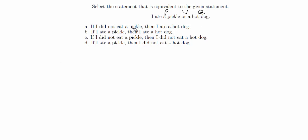Option A says: if I did not eat a pickle, then I ate a hot dog — that's not P implies Q. B: if I ate a pickle, then I ate a hot dog — that's P implies Q. C: if I did not eat a pickle, then I did not eat a hot dog — that's not P implies not Q. And D: if I ate a pickle, then I did not eat a hot dog — that's P implies not Q.